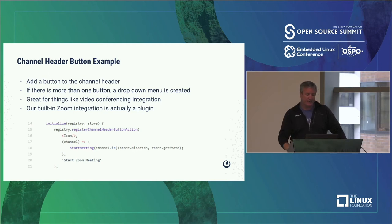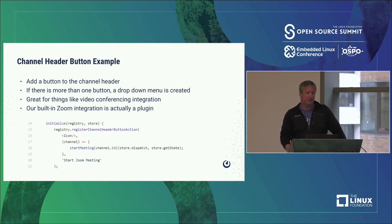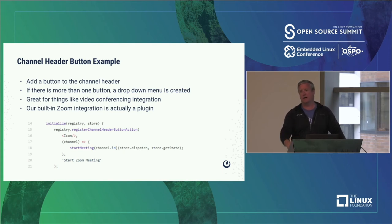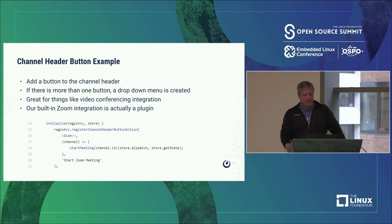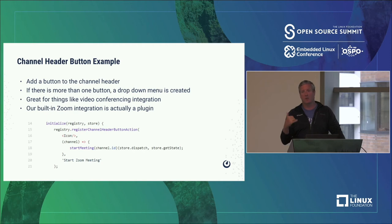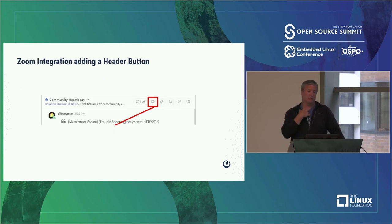We have a channel header button example. This adds a button to the top of the channel header — if there's more than one button, a dropdown is created and they get grouped together. This is great for video conferencing integration. Our built-in Zoom integration is actually a plugin, as are our built-in Jitsi and BlueJeans integrations. Whenever a vendor says they'd like Mattermost to integrate with something, we can just copy one of these and convert it. The code is very simple: registerChannelSidebarButton, you give it an icon, a callback, and a tooltip, and that JavaScript function gets called when somebody clicks the button in the UI.